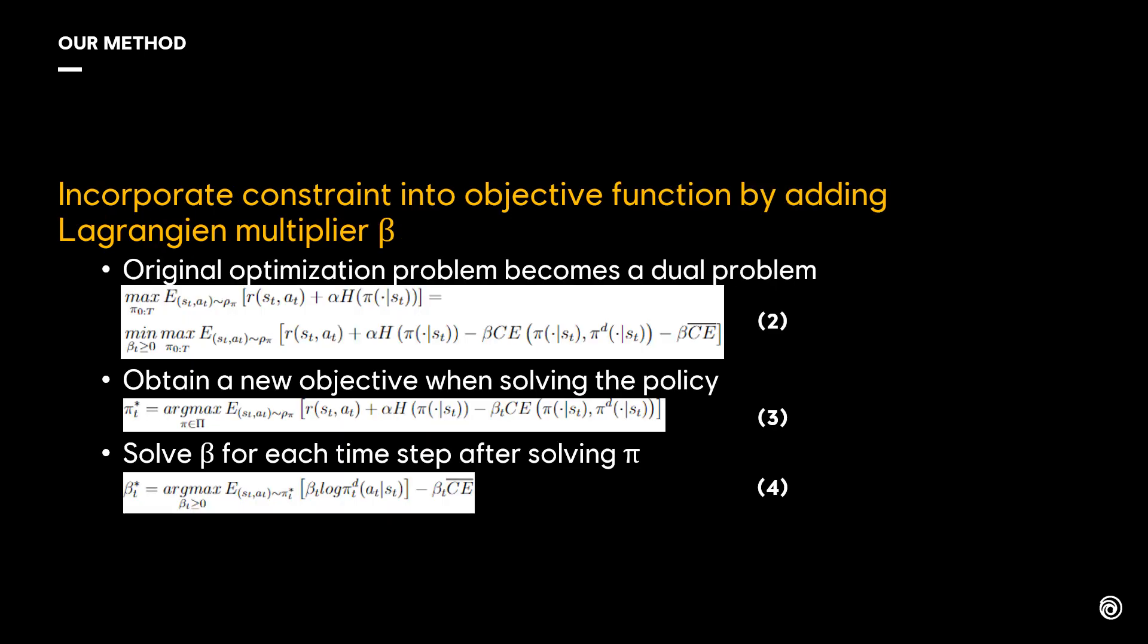Then, we incorporate the constraint into the objective function by adding Lagrangian multiplier beta, shown in equation 2. The original optimization problem becomes a dual problem.